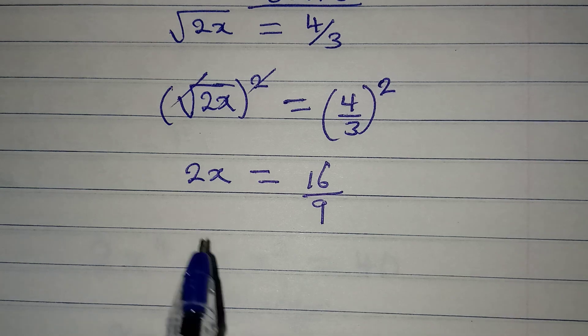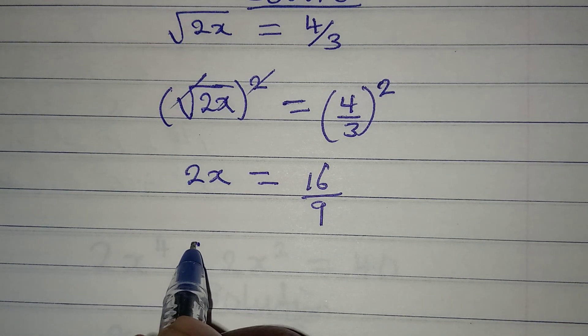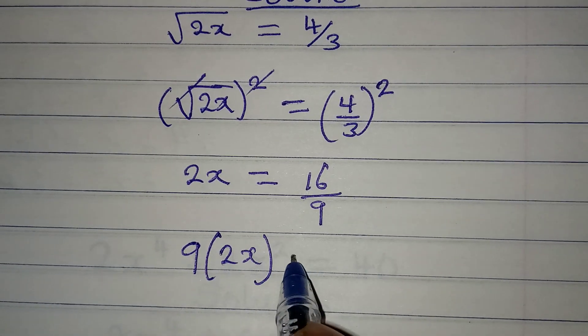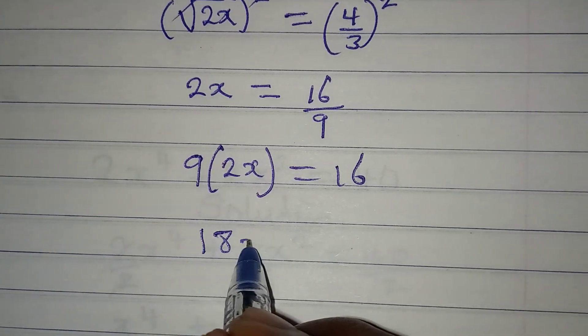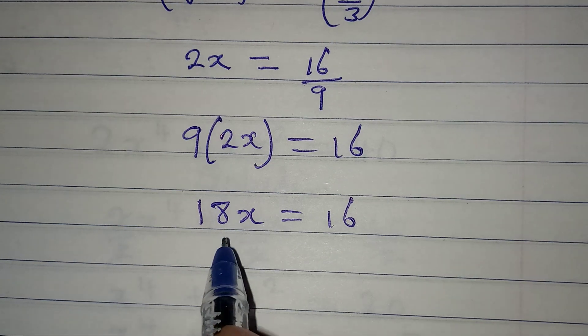From here, 16 over 9 on the right. What should I do? Cross multiply so that we have 9 multiplied by 2x, which will be equal to 16. Then 18x is equal to 16.